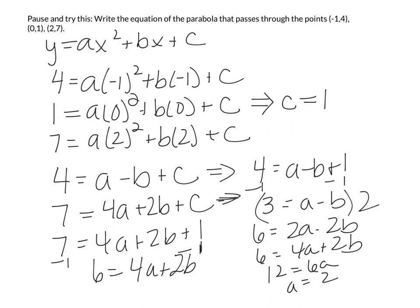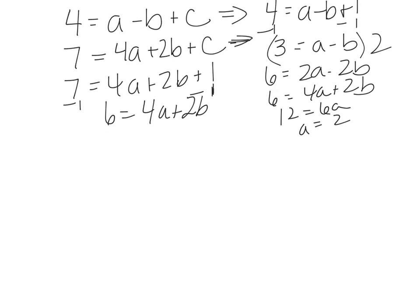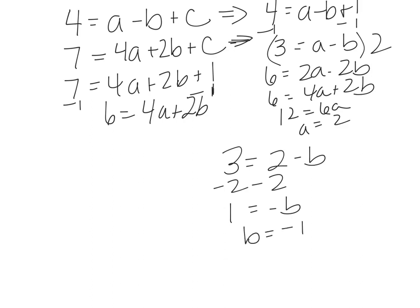Multiplying the first reduced equation by 2: 6 equals 2a minus 2b. Adding to 6 equals 4a plus 2b: 12 equals 6a, so a equals 2. Plugging back in: 3 equals 2 minus b, so 1 equals negative b, meaning b equals negative 1. The final equation is y equals 2x² minus x plus 1.